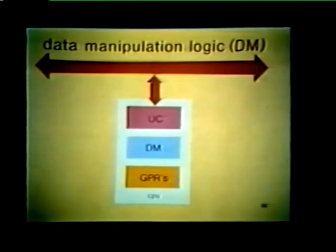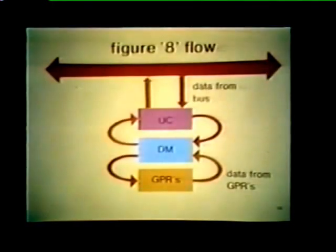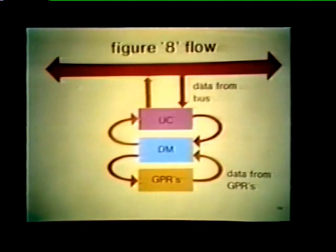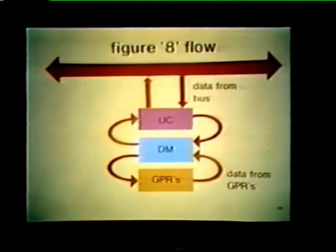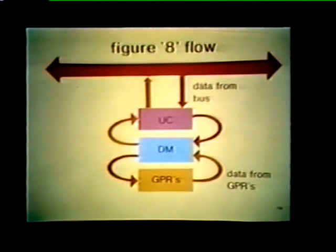Now let's see how these three major elements interact. Information flow through the processor is in the form of a figure eight. The unibus control routes data from the bus to the data manipulation logic for modification, and then to the GPRs for storage. Or, data from the GPRs can be modified by the data manipulation logic and then routed to the bus by the unibus control.